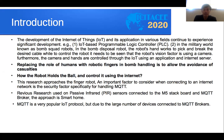Examples include IoT-based PLC, or programmable logic controller, and applications in the military world such as a bomb squad or bomb disposal robot. The robot's hand works to pick and cut the desired cable. To control the robot, the robot vision uses a camera, and the computer, camera, and hand are controlled through the Internet of Things using an application and internet server.